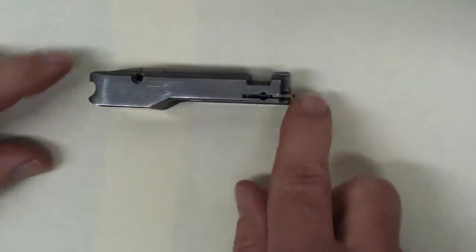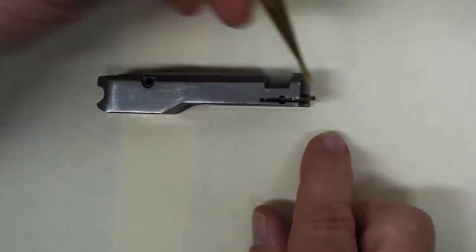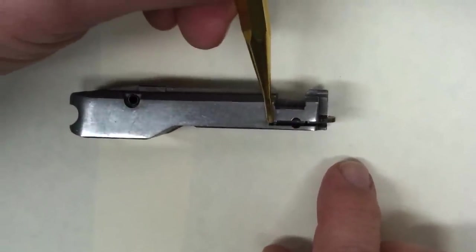We'll set those aside. Here's our bolt. This is what we want to work on. There's the extractor. There's the extractor plunger, and behind it is the spring.